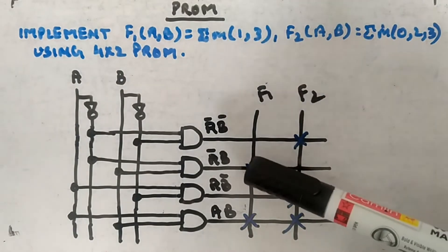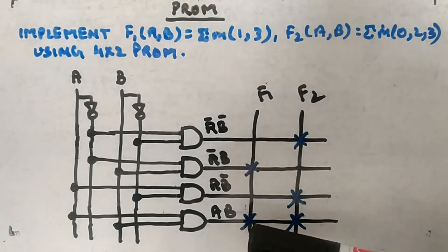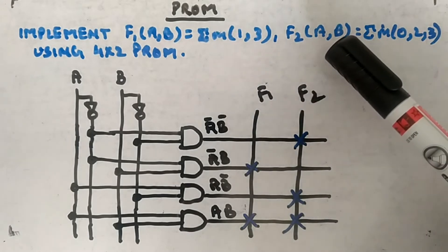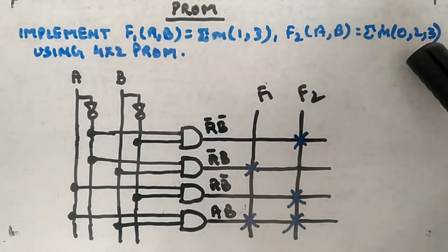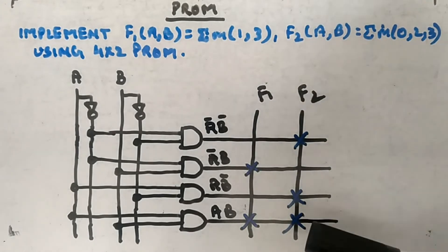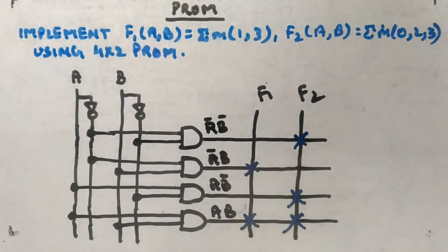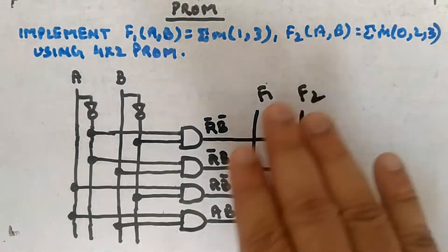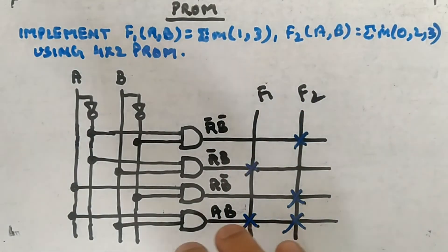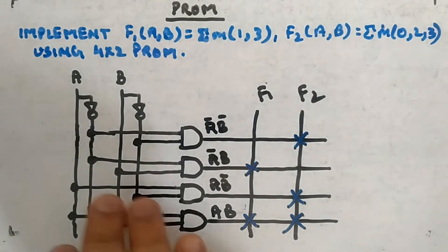Now you can see I have crossed it already. In F1 you have 1 and 3, so 0, 1, and 3: third minterm, first minterm. In F2 you have 0th minterm, second and third. This is how you can implement without using decoder. Same, it is PROM only, and it is programmable OR gate. You can see the AND gates are permanently connected.